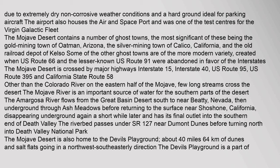Other than the Colorado River on the eastern half of the Mojave, few long streams cross the desert. The Mojave River is an important source of water for the southern parts of the desert. The Amargosa River flows from the Great Basin Desert south to near Beatty, Nevada, then underground through Ash Meadows before returning to the surface near Shoshone, California, disappearing underground again a short while later, with its final outlet into the southern end of Death Valley. The riverbed passes under SR 127 near Dumont Dunes before turning north into Death Valley National Park.